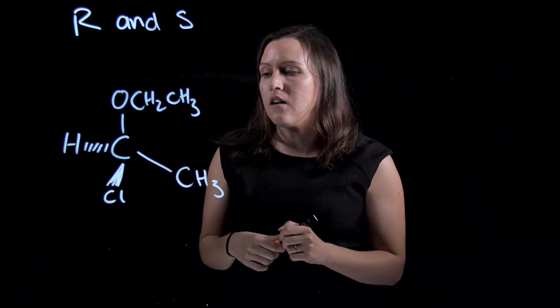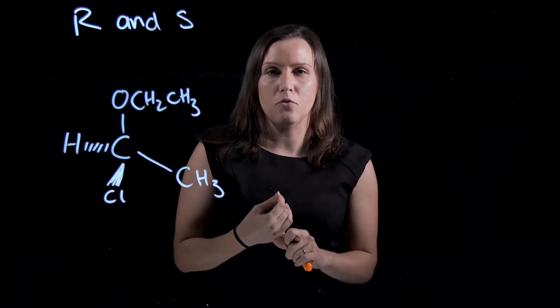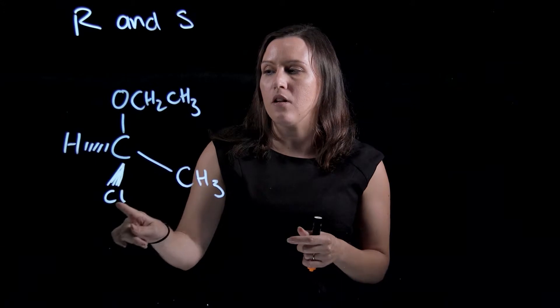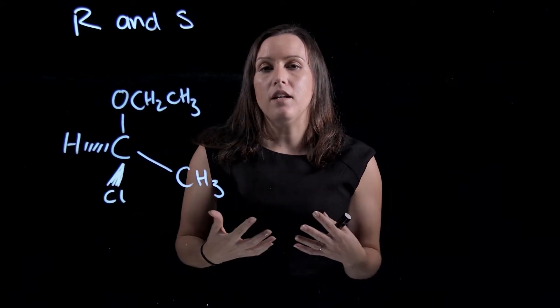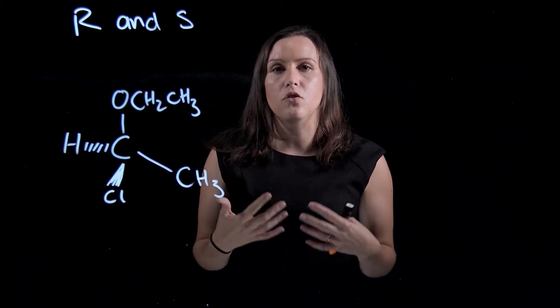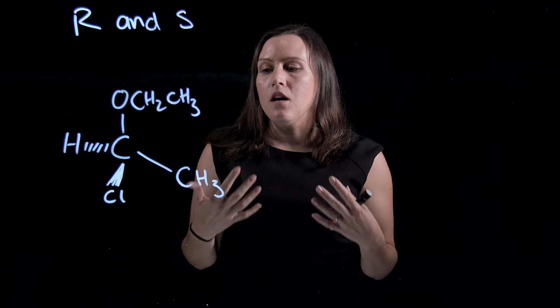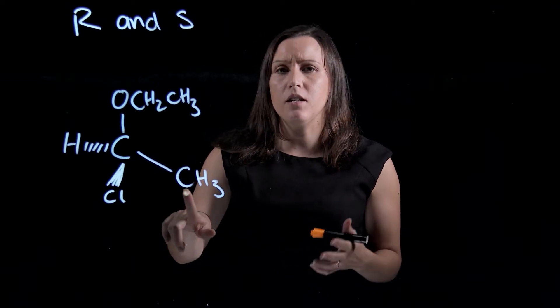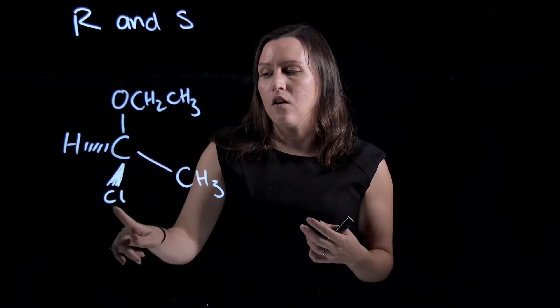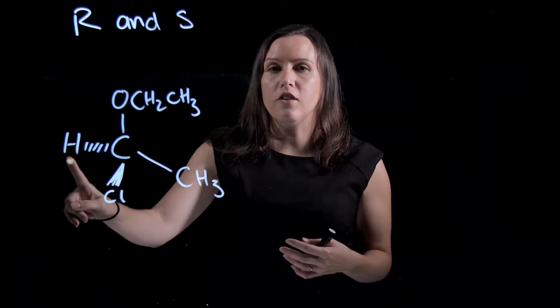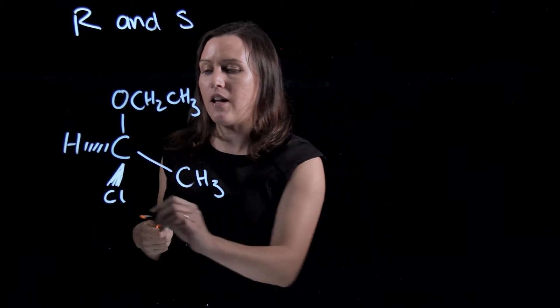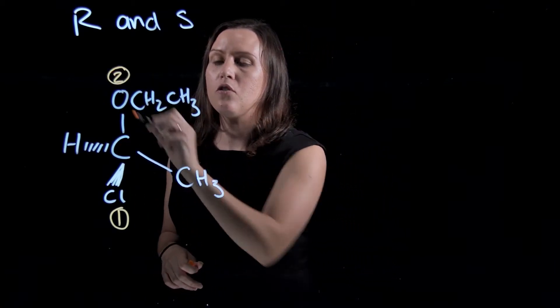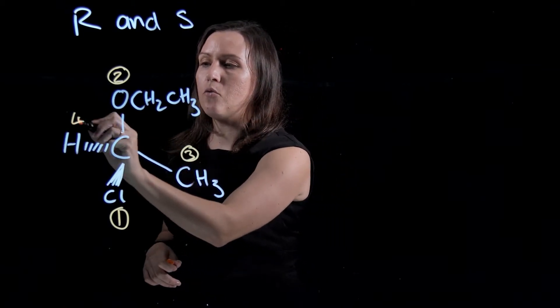Looking at this structure here, the first rule in the Cahn-Ingold-Prelog rules is to look at the directly bonded atoms. In this case we've got an oxygen, a carbon, a chlorine and a hydrogen, and think about the weight of them. I do molecular weight because it's the easiest, but normally you do the number of protons. So carbon sits around about 12, oxygens 16, chlorines 35.45, and hydrogens 1. You can see clearly chlorine has the highest molecular weight, so it would be the highest priority. Oxygen at 16 would come in at number 2, carbon would be 3, and hydrogen would be 4.